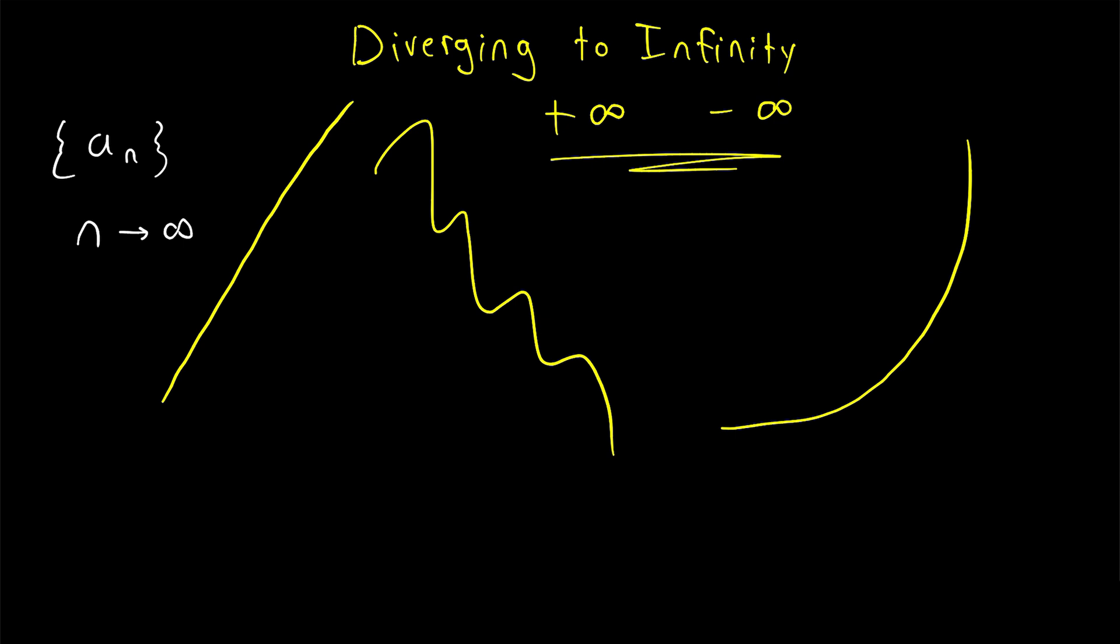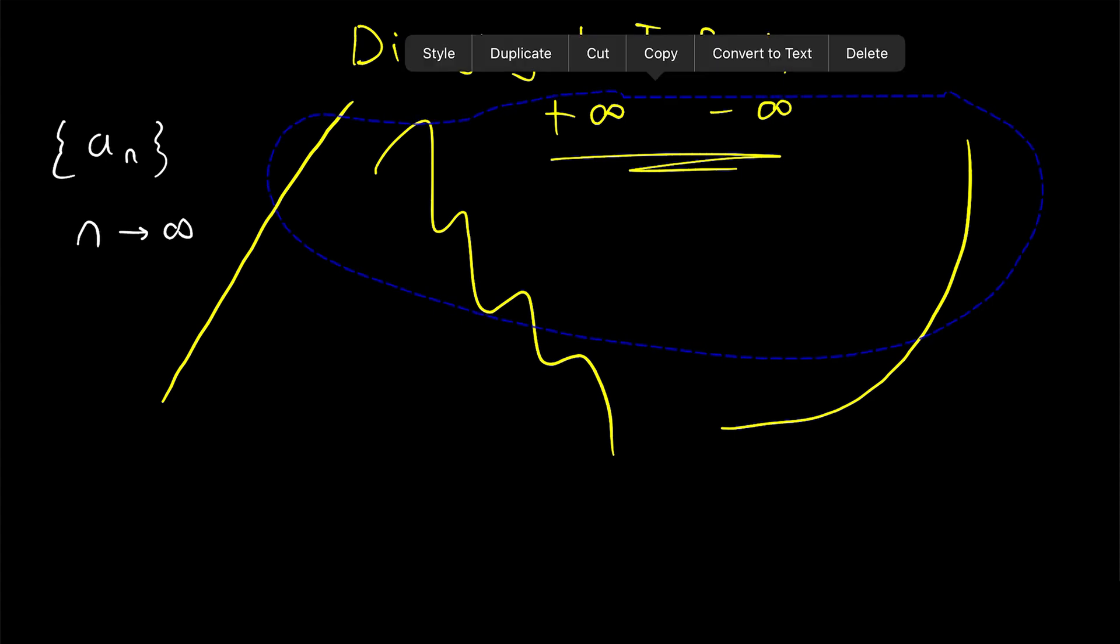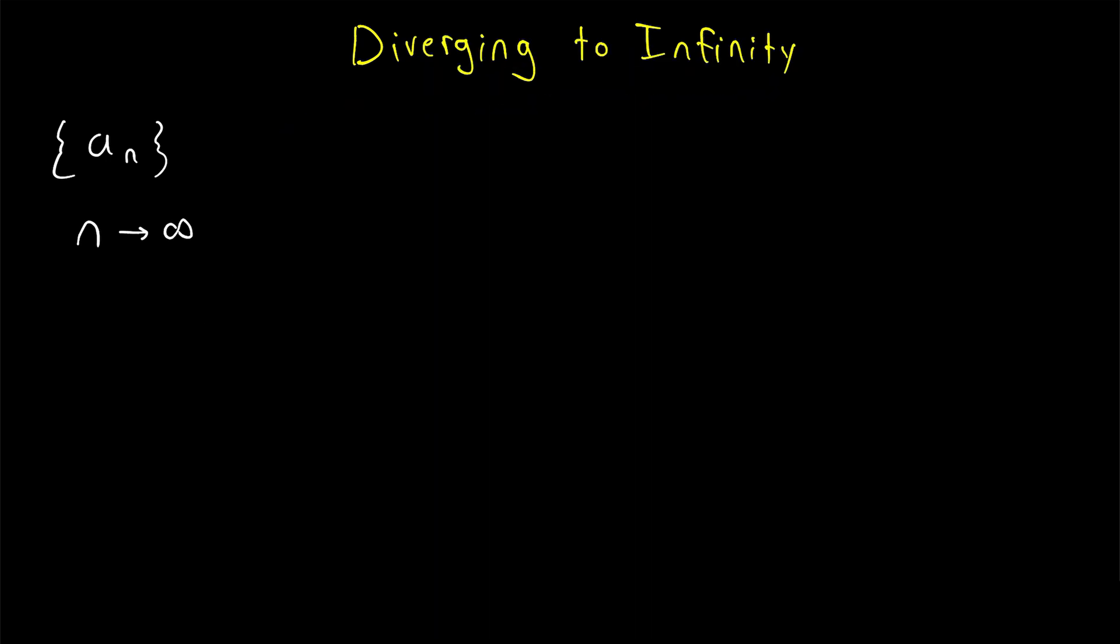These sequences look like they're on their way to positive infinity or negative infinity. So what can we say about these sequences? How can we capture their behavior in a definition? We'll introduce the formal definition of diverging to infinity shortly.